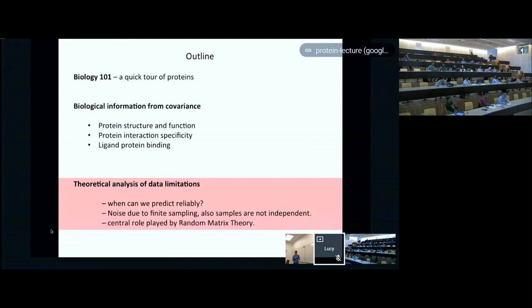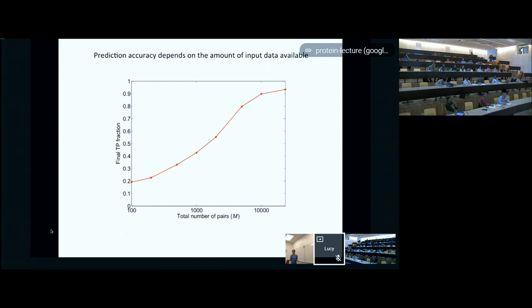I want to return to the idea that we have limited data. It would be nice to say something about what we can predict reliably and what we can do to address noise due to finite sampling. When I showed you the example earlier predicting which homologues interacted with each other, there's a clear dependency on the amount of input data available. Here I have the total number of pairs in the alignment on the x-axis, and you can see that as the alignment size grows—if we have 10,000 pairs we can do a much better job than if we have 1,000 or 100 pairs. Likewise, when using these approaches to predict contacts in proteins, we always do better when we have more sequences.